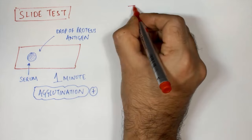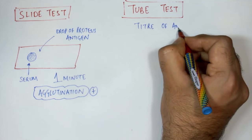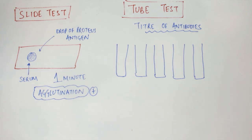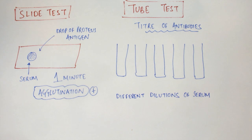Talking about the tube test, this test is mainly done to detect the titer of the antibodies in the sample of the patient. To do this test we set up multiple test tubes and we put the serum of different dilutions into each test tube.